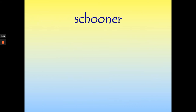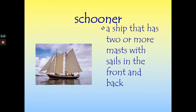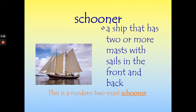We're also going to see the word schooner. A schooner is a ship that has two or more masts with sails in the front and the back. Here is a picture of a schooner. A mast is the tall part of the ship that holds the sails. A sailboat sometimes only has one mast because it's smaller, but a schooner is a larger boat with two. This is a modern two-mast schooner.